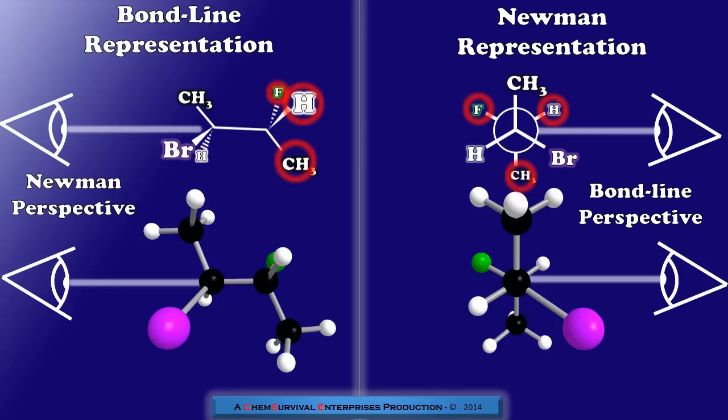You notice these atoms here. If they're on the distal carbon, they all end up in a staggered orientation at the back of our Newman projection with bonds that are eclipsed by the atom in front.